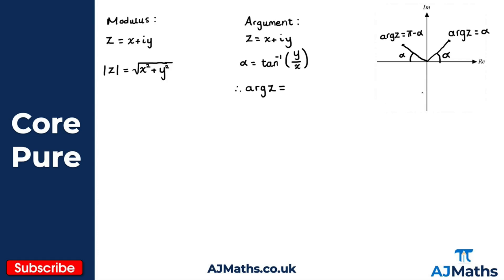What about if we're in the third quadrant? We're looking for this angle alpha again. Because we can think about what we've got for the second quadrant, if we're in the third quadrant that would simply be the negative of that result. So it's going to be minus pi minus alpha — you just take that result and multiply it by minus one.